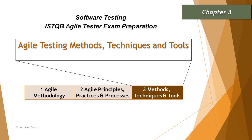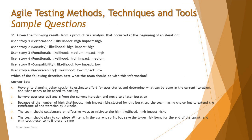Question number 31 is a different type of question where they give you a lot of information with likelihood and impact, and ask what the team should do with this information — more of a psychological and team management understanding. Given the following results from a product risk analysis at the beginning of the iteration, there are six stories: some functional, some non-functional including performance, security, compatibility, and recoverability.